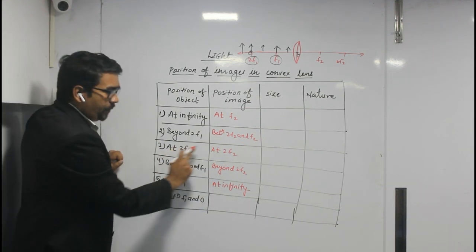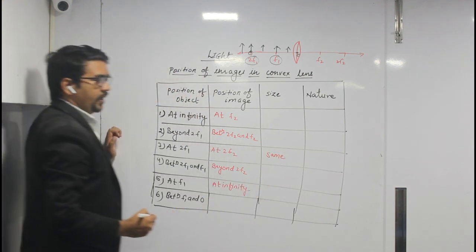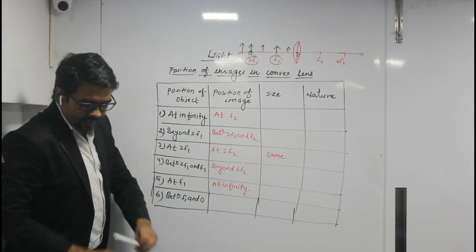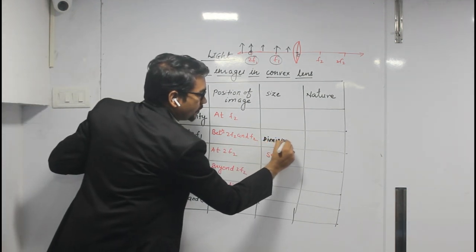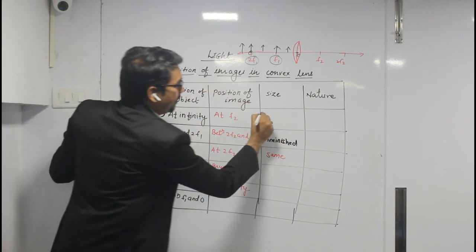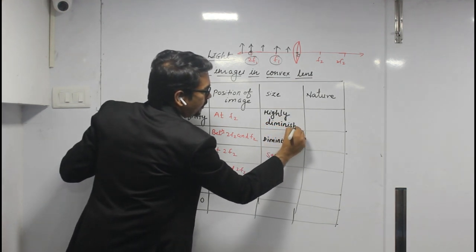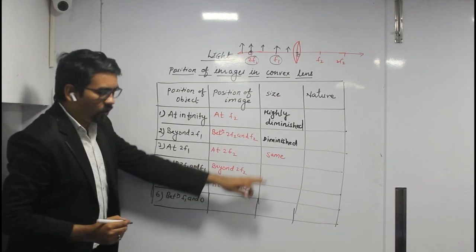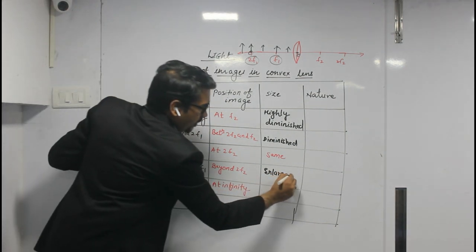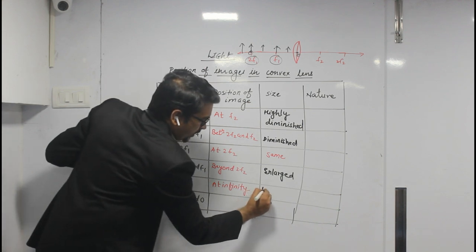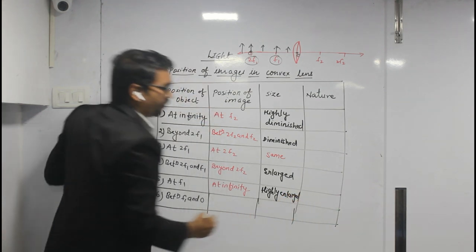Now, size. At 2F1 and 2F2 you can see the same position, so the size is the same. As we move up, the size will be diminished, and further up it is highly diminished. Just below same size, it is enlarged or magnified, and below that it is highly enlarged.